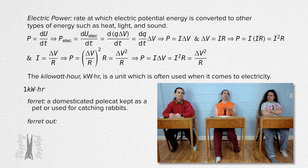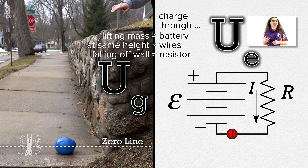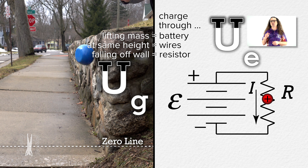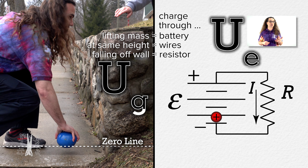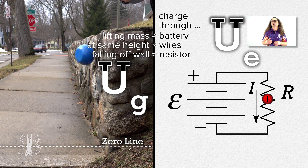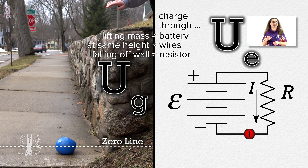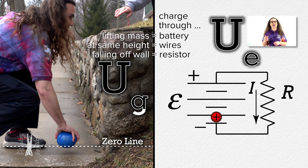Regarding the resistance of the wires: unless otherwise stated, all wires are considered to be ideal and have zero resistance. As charges move along a wire with zero resistance, the charge experiences zero change in electric potential energy. That is what is happening in the wires at the top and bottom of the circuit, analogous to a mass at rest at a constant height at either the top or bottom of the wall.